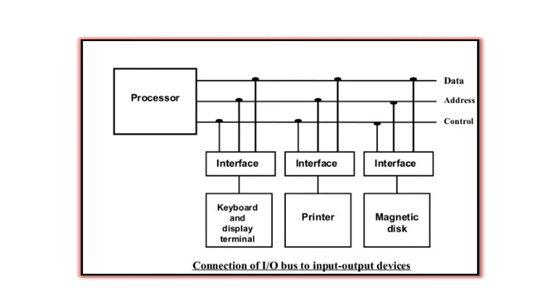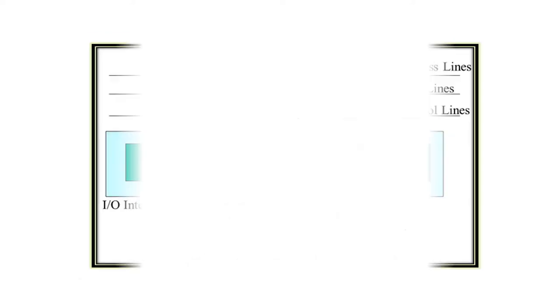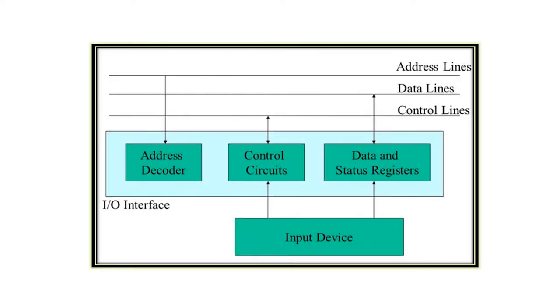An interface circuit is required to connect input-output bus with peripheral devices. Each interface decodes the address and control received from the input-output bus, interfaces from peripherals, and provides signals for the peripheral controller. Each peripheral has its own controller that operates the particular electromechanical device. The interface circuit consists of address decoder, control circuits, data registers, and status registers.